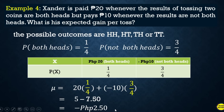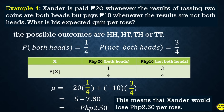So this means that Sander would lose 2 pesos and 50 centavos per toss. In other words, he is at a loss — he needs to pay out. His expected gain per toss is negative 2 pesos and 50 centavos.